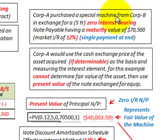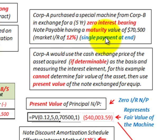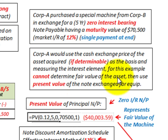For example, Corporation A purchased a special machine from Corporation B in exchange for a five-year zero interest bearing note payable having a maturity value of seventy thousand five hundred dollars. The market rate of interest on this note payable is twelve percent, with a single payment at the end of the fifth year. Corporation A would use the cash exchange price of the asset acquired, if determinable, as the basis for measuring the interest element. But in this example, you cannot determine the fair value of the asset.